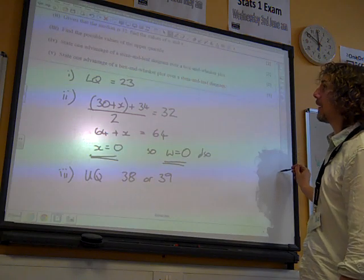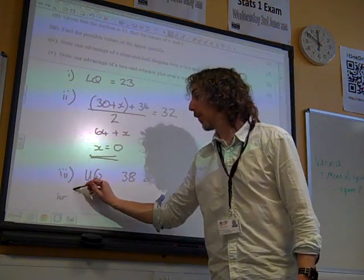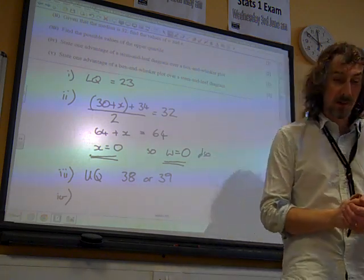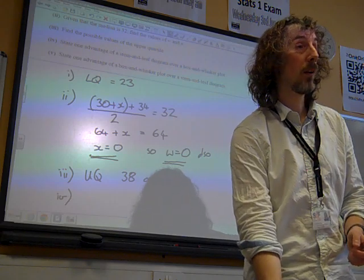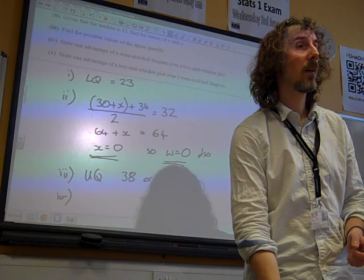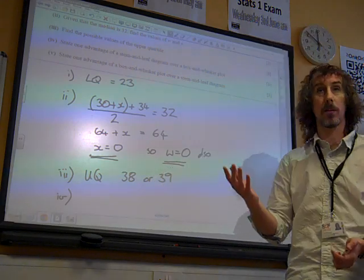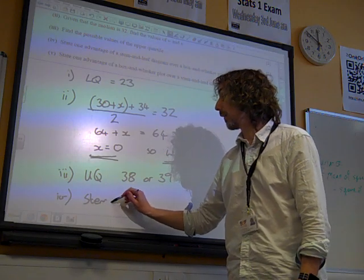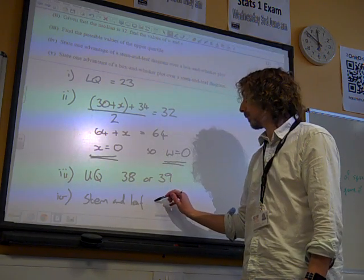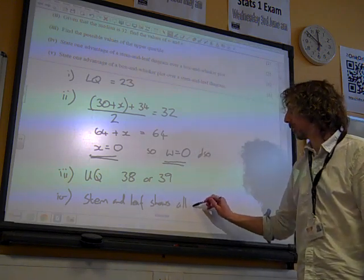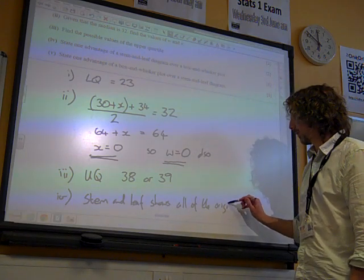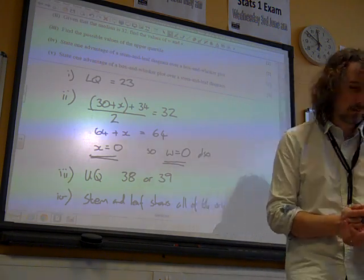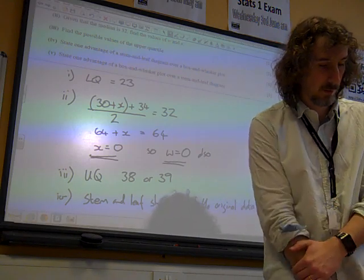State one advantage of a stem and leaf diagram over a box and whisker plot. Can we think of an advantage of stem and leaf over a box and whisker? What do you think, Nathan? A stem and leaf diagram shows all of the data, whereas a box and whisker plot only shows key points in it. OK, that's a great answer, isn't it? So the stem and leaf diagram shows all of the original data. OK, we don't lose any of the detail involved in it. It shows all the data. You can see all the values. Brilliant.